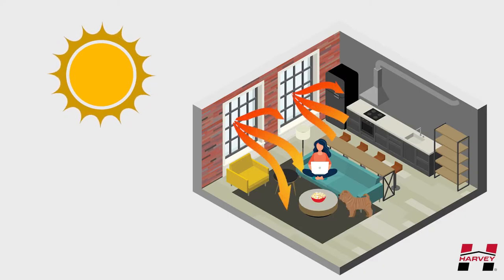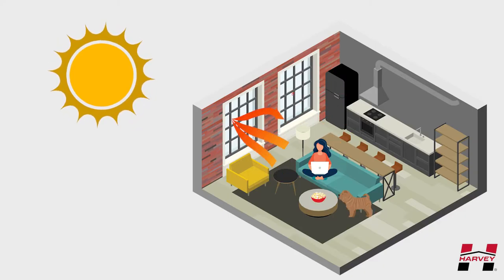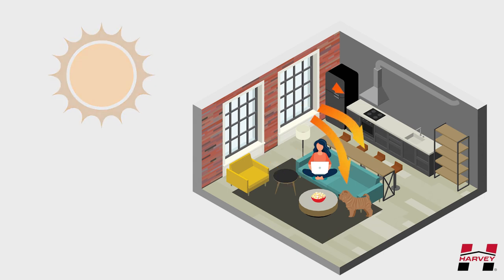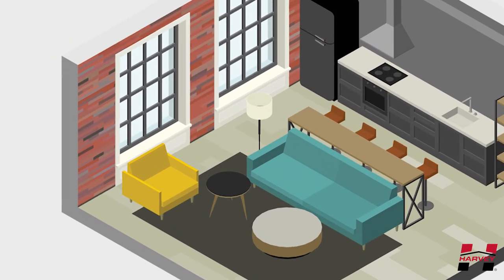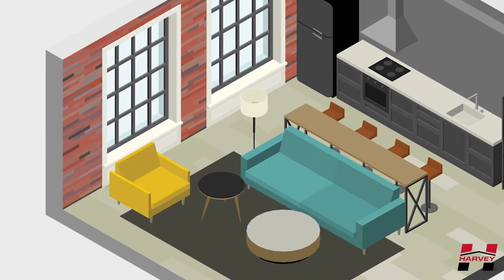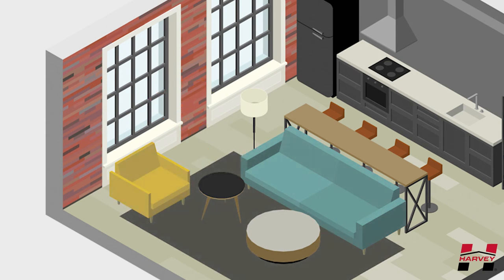And one last point about solar heat gain coefficient: both radiant heat and UV rays are filtered with lower numbers. So if fading of your flooring, curtains, or furniture is important to you, you may want to take that into consideration as well.